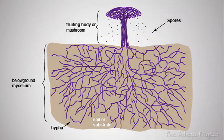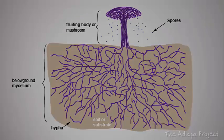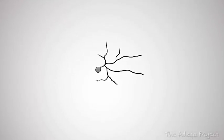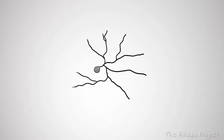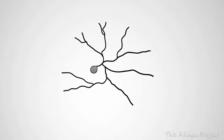The fruiting body is also built out of hyphae and releases thousands of spores. Each spore can travel to distant places and sprout when the conditions are right. When a spore sprouts, hyphae grow out of it and form a vast mycelium again.